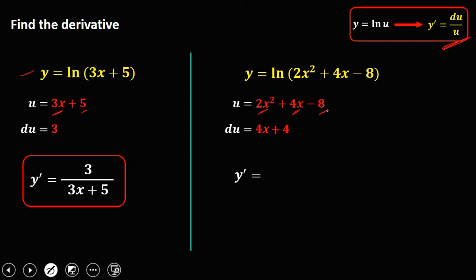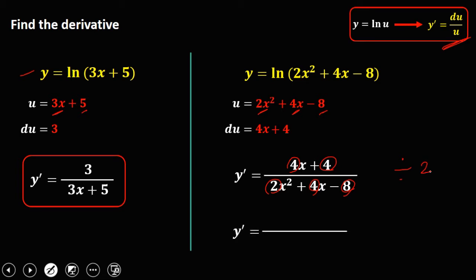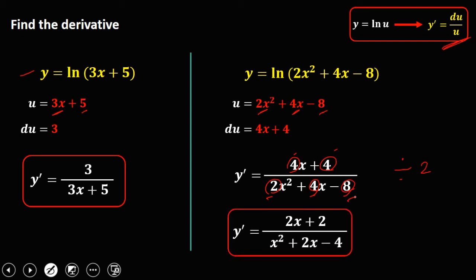To solve for the derivative, y prime is equal to du over u — so du is 4x + 4, over u, that's 2x squared + 4x − 8. Since all numerical coefficients are divisible by 2, divide all numbers by 2: y prime equals (2x + 2) over (x squared + 2x − 4). So this is now the derivative.